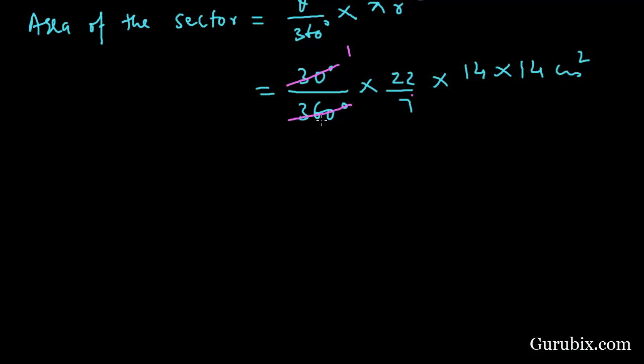30 times 1 is 30, 30 times 12 is 360, 7 times 1 is 7, 7 times 2 is 14, 2 times 1 is 2, 2 times 6 is 12, 2 times 3 is 6, 2 times 11 is 22, giving us 11 times 14 over 3 centimeter squared.